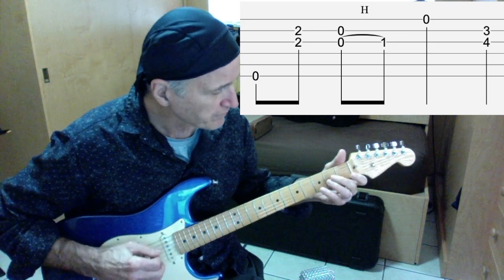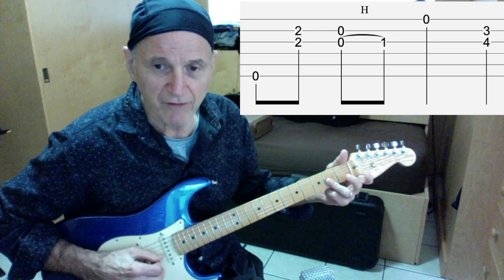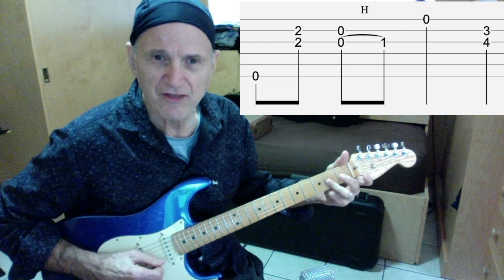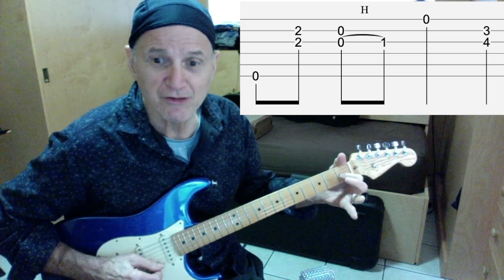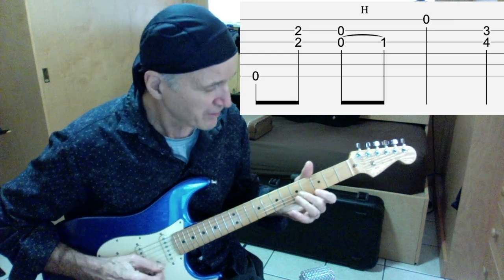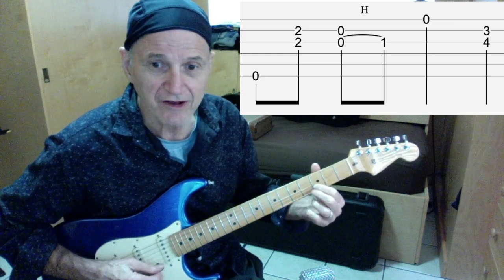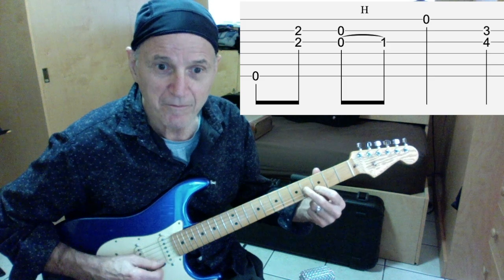Slowly: sixth string open, third and second string second fret, then hit the third and second string again open. Hammer on your third string first fret, then your first finger here on the second string third fret, second finger... sounds like this.